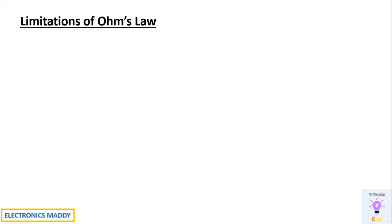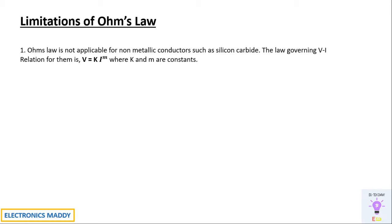Let's look into the limitations of Ohm's Law. Every law has certain limitations — it's not applicable in certain areas or aspects. Ohm's law is not applicable for non-metallic conductors such as silicon carbide, and other non-metallic conductors as well. It has a different equation: V is equal to K times I to the power M, which is not a linear relation. It is only applicable to metallic conductors.